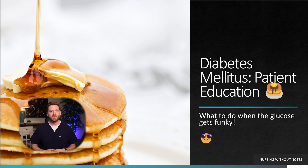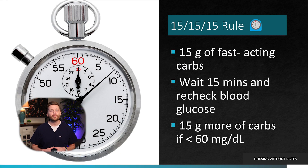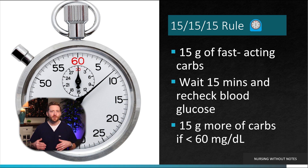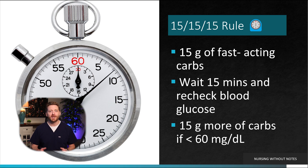Let's kick things off by discussing how to manage mild hypoglycemia when the client is fully conscious. Hypoglycemic episodes can occur unexpectedly at any time of the day, and having a reliable rule to follow can help raise blood glucose levels back into the normal range. This rule is known as the 15-15-15 rule: consume 15 grams of fast-acting carbohydrates, wait 15 minutes, then recheck the blood glucose level. If blood sugar remains below 60, consume an additional 15 grams of carbs. This approach is recommended when blood glucose falls below 70, and it's valuable even if you don't have diabetes.